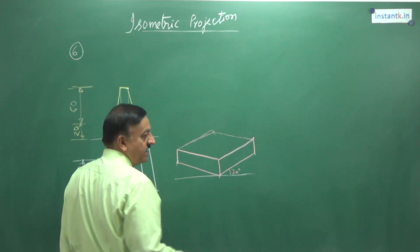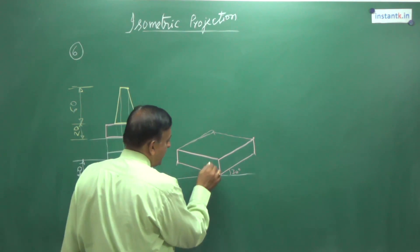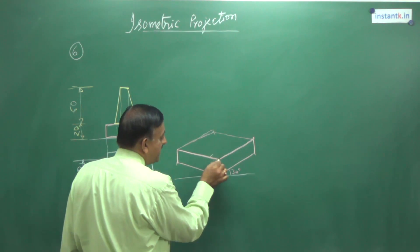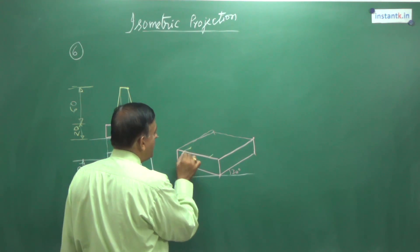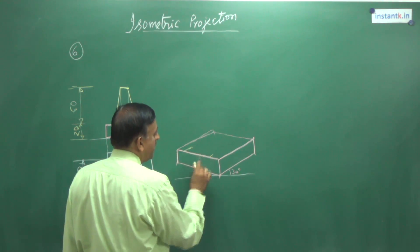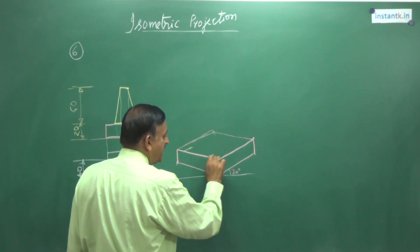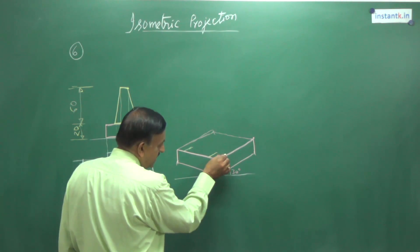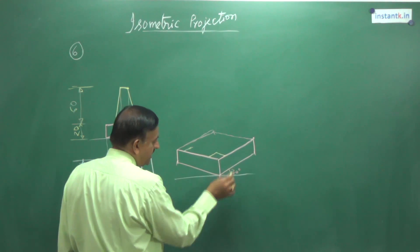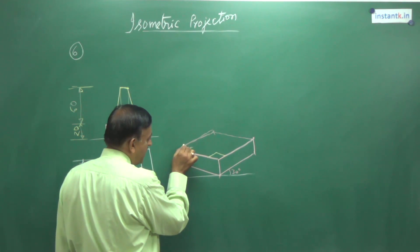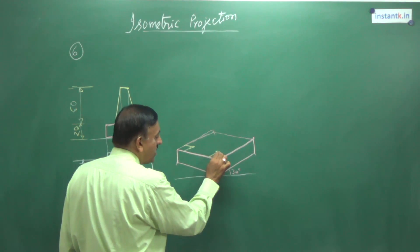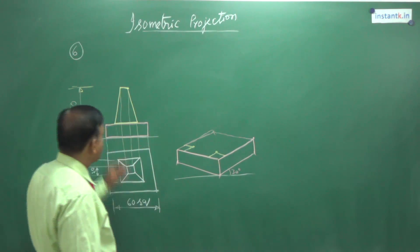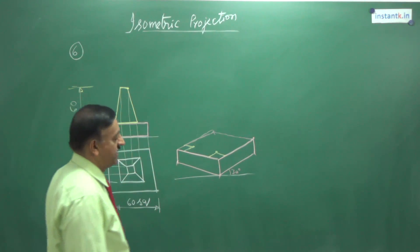This is 60 already. If I want 40, I should reduce 10 on either side. So reduce 10 here and 10 here. Mark 10 here, draw a 30 degree line. Similarly, mark 10 mm here and draw a 30 degree line. Mark 10 mm here and draw another 30 degree line. You are getting the base corners of this square of 40 mm.